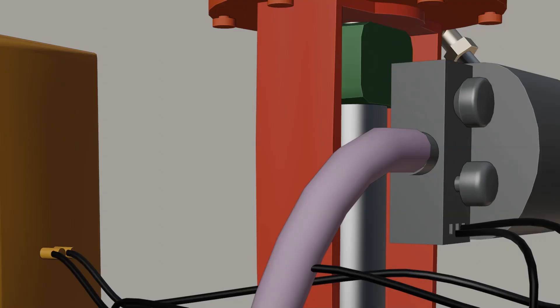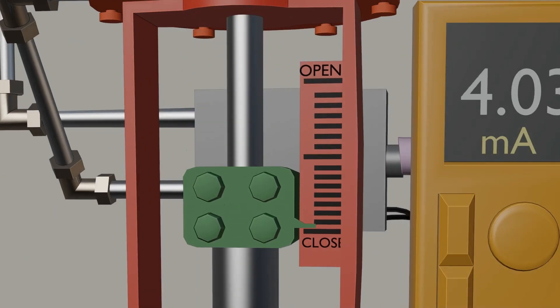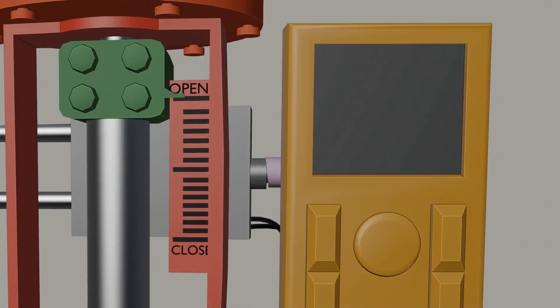Now we unplug the air connection to check the valve position. Valve remains closed because this failed action closed the valve. Now we unplug signal connection to check the valve fail action.